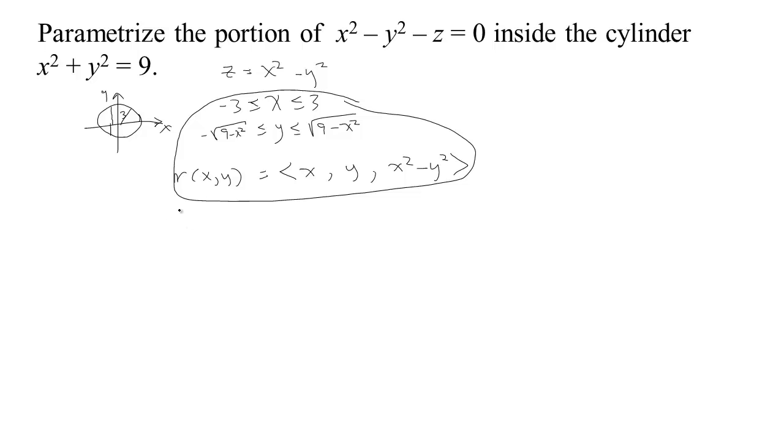So now this doesn't necessarily have symmetry around the z-axis in the same way, but we can still use cylindrical coordinates to do it. Remember in cylindrical coordinates, the x is r cosine theta, and the y is r sine theta. If x and y lie within the circle of radius 3, then we're just saying that the radius can be no more than 3, and theta can go from 0 to 2 pi, so that we can look all the way around the z-axis.